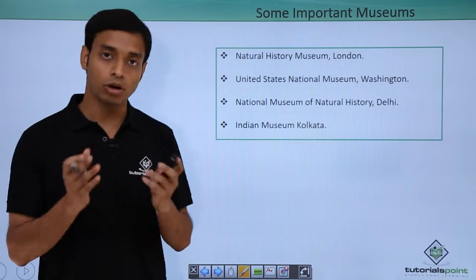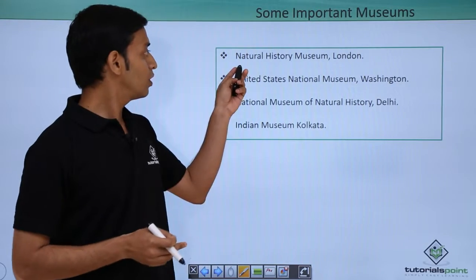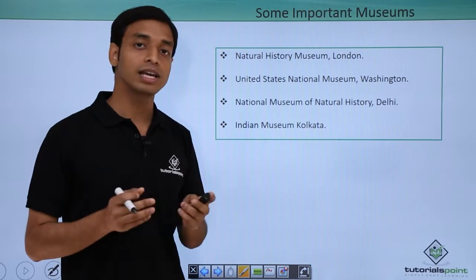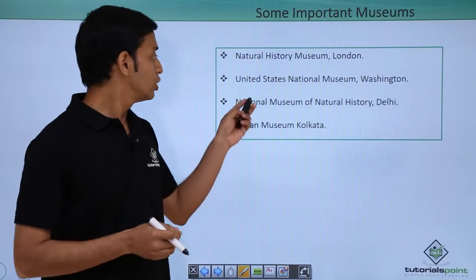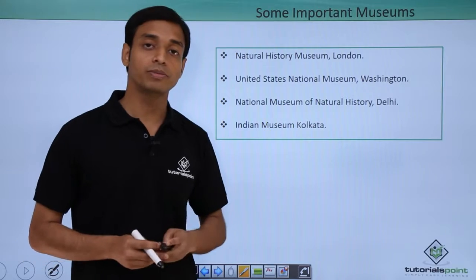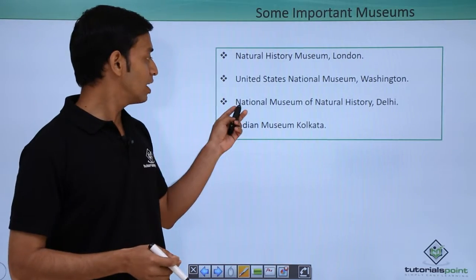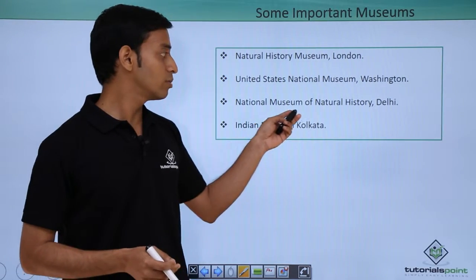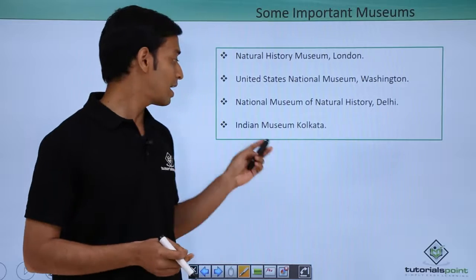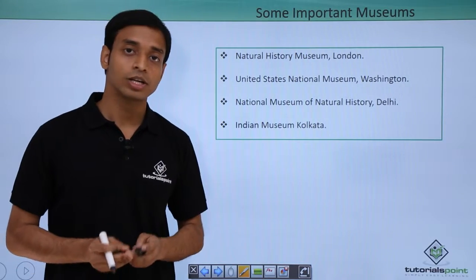Some of the important museums set up throughout the world are: first, the Natural History Museum in London; the United States National Museum in Washington; in India, we have the National Museum of Natural History in Delhi, and the Indian Museum in Calcutta.